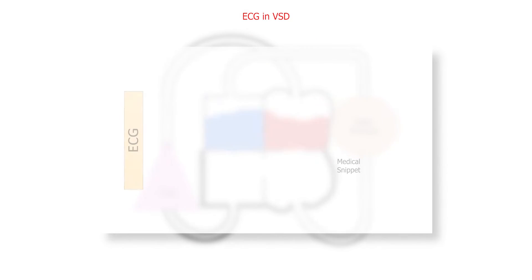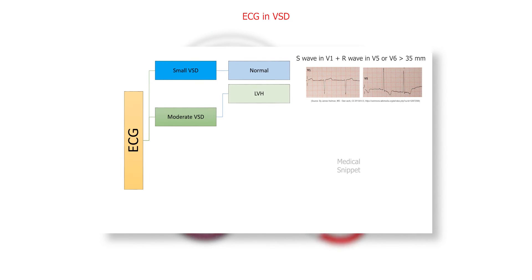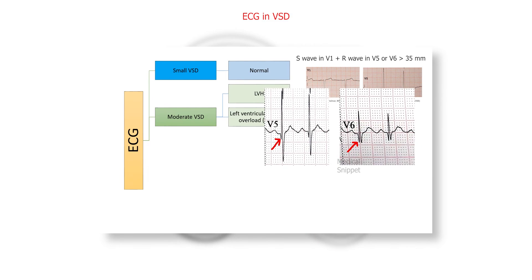Let's see the electrocardiogram findings in VSD. In small VSD, the ECG is usually normal. In moderate VSD, there is left ventricular hypertrophy and there is left ventricular volume overload state, that is Q wave in V4, V5, and V6 leads.